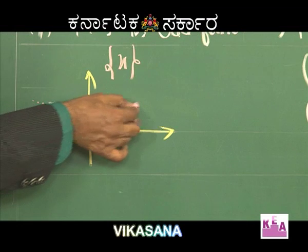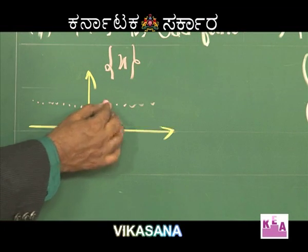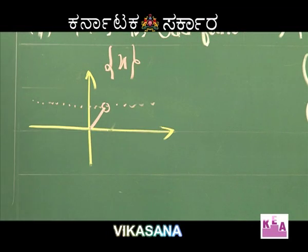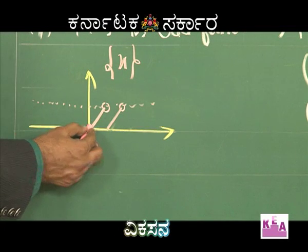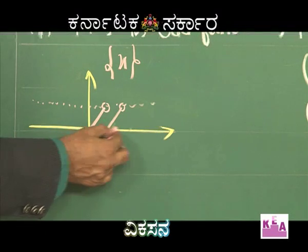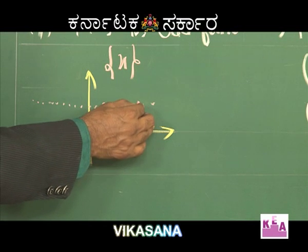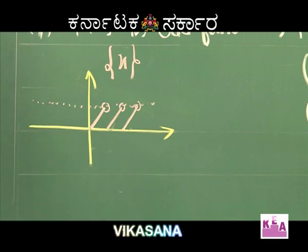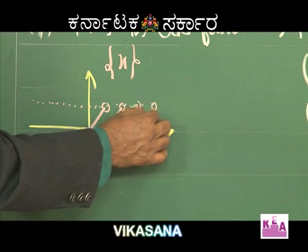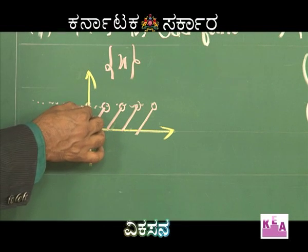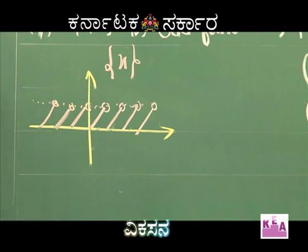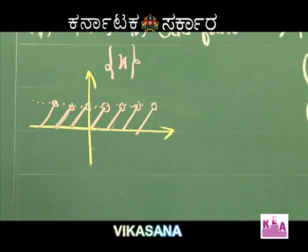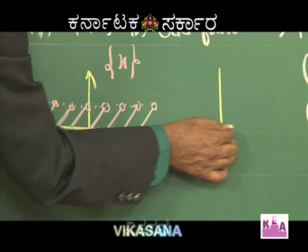Between 0 and 1, the fractional part of x equals x itself. Between 1 and 2, it equals x minus 1. Between 2 and 3, it equals x minus 2, and x minus 3 for the next interval, and so on. This is the graph of the fractional part of x.